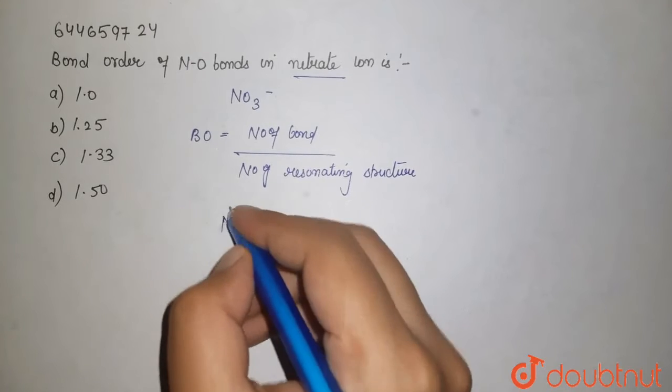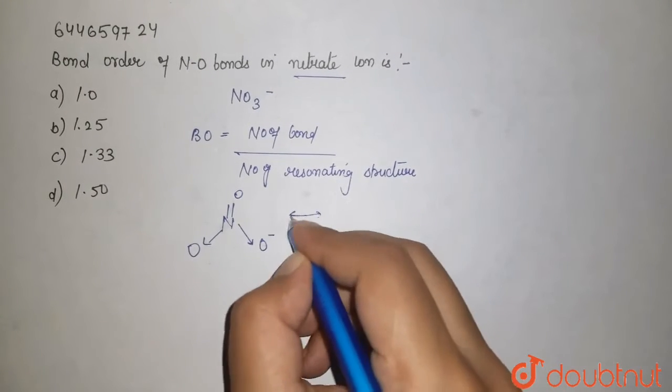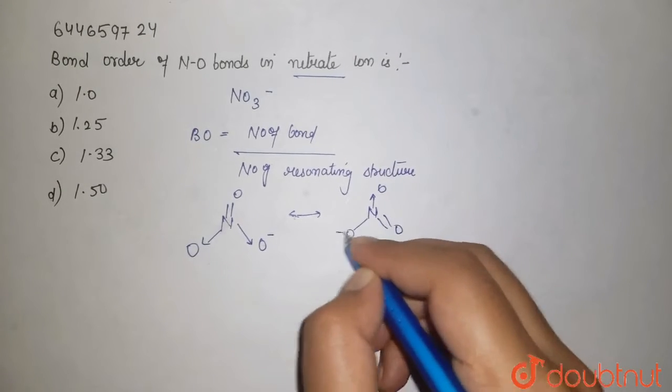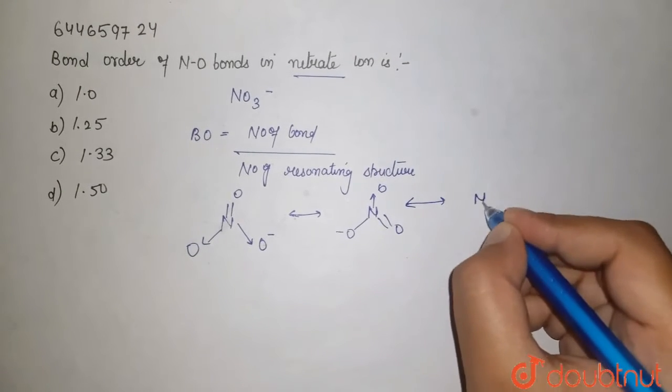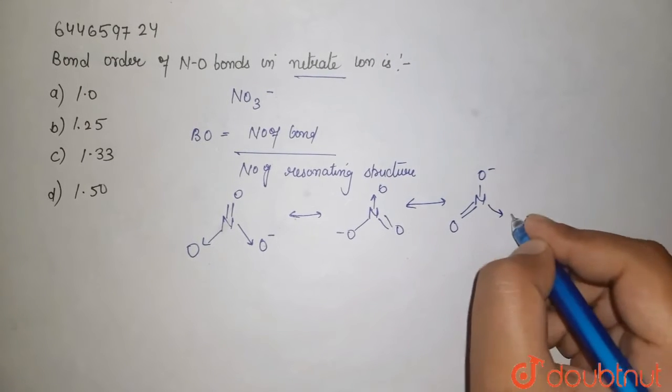That is nitrogen here. It is double bond. This is how. And next we will have O minus. One more, that is N, we are having this O minus, here it is O, and this is this.